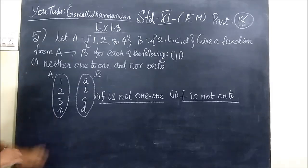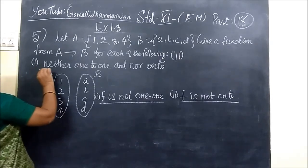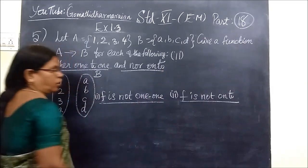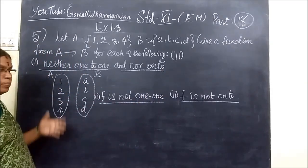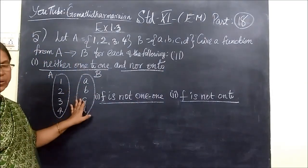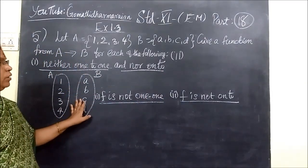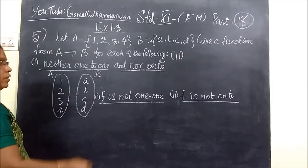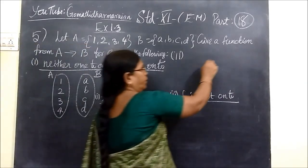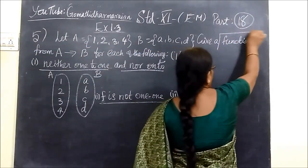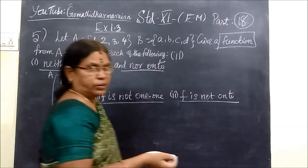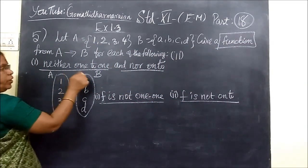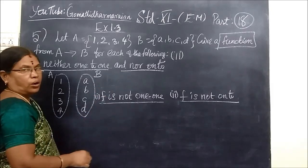First one: neither one-one nor onto. That means it is not a one-one function and not an onto function. It should be a function, but it should not be one-one or onto.